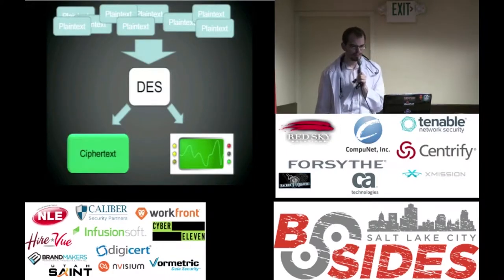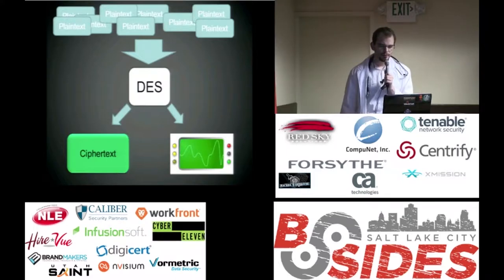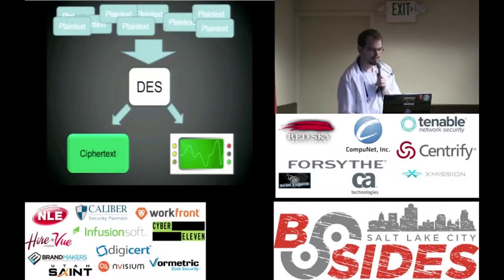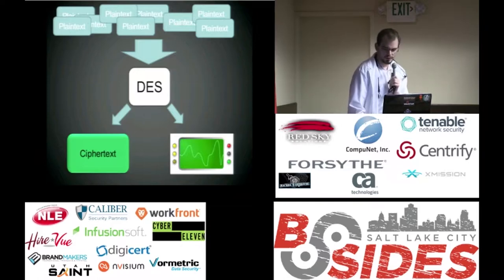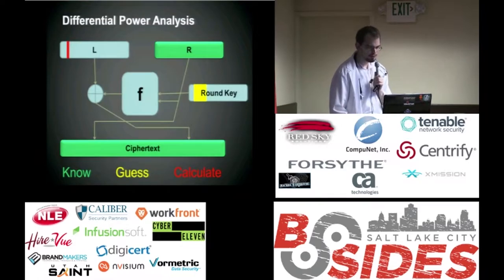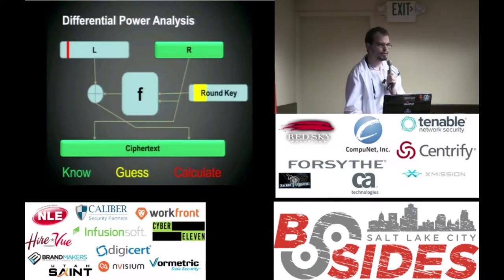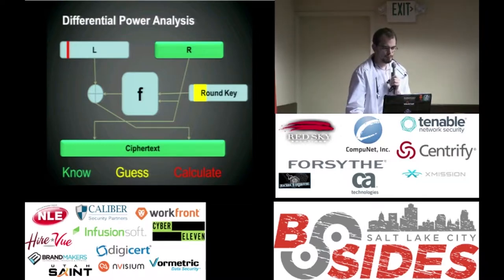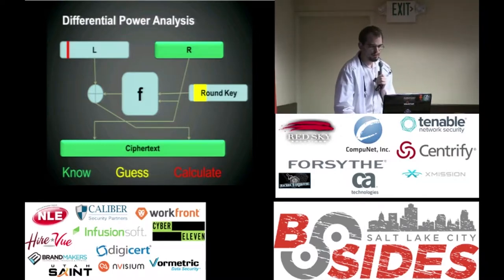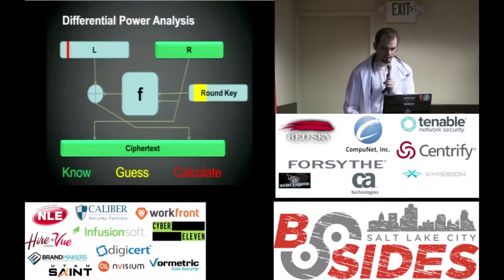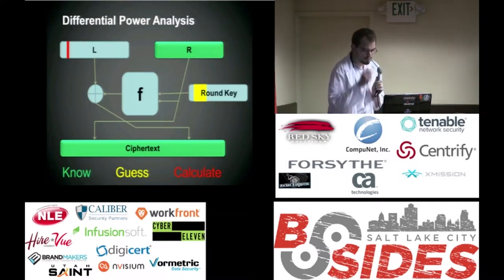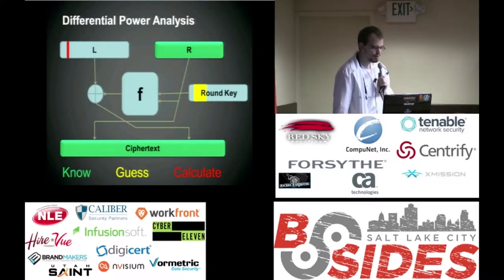One attack I want to look into is called differential power analysis. Unlike simple power analysis, we're going to look at a whole bunch of different traces, average them together, and take their difference to find interesting information. The cool thing is it not only allows us to tell what instructions got executed, but what values those instructions were executing on — so it can defeat things that rely on constant execution time. To do a DPA attack, we get a whole bunch of different plaintexts, run our encryption algorithm — I'll use DES as an example — and record its power consumption and the resulting ciphertext.